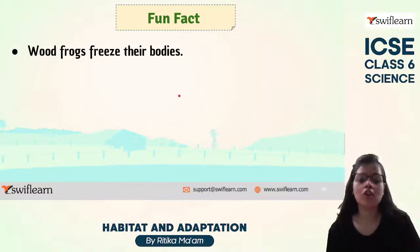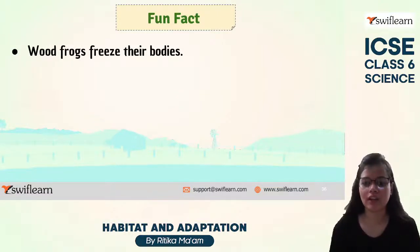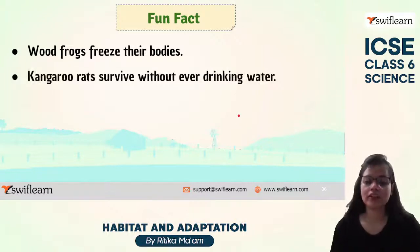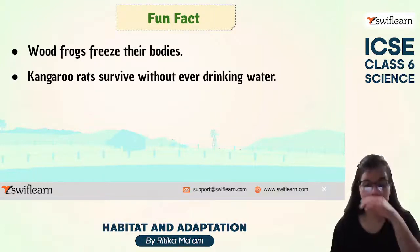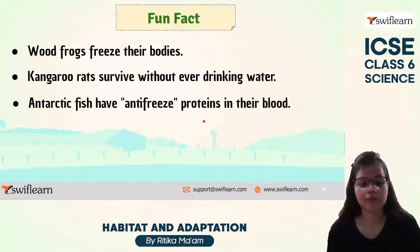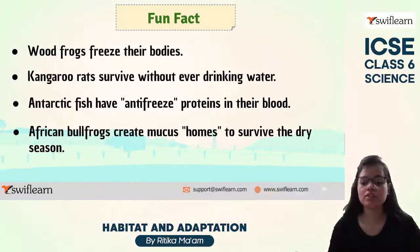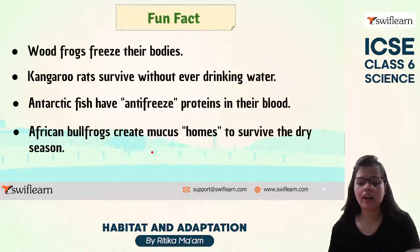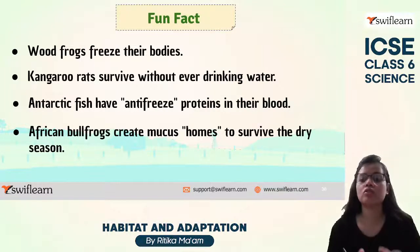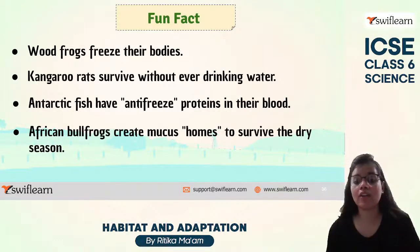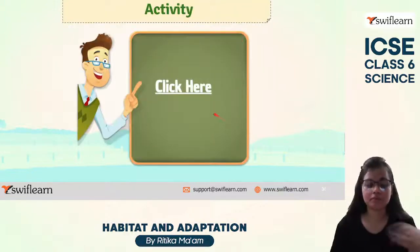Here are some fun facts about animal adaptations: wood frogs can freeze their bodies — a kind of adaptation. Kangaroo rats can survive without even drinking water — they are a desert animal. Antarctic fish have antifreeze proteins in their blood so it does not freeze. African bullfrogs create mucus homes to survive in dry regions. All these animals have some kind of adaptation to make it possible for them to survive in extreme conditions.